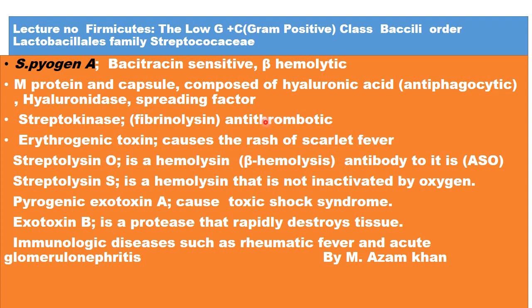Another important virulence factor of Streptococcus pyogenes is streptokinase, which is a fibrinolysin and anti-thrombotic enzyme. It is sometimes used clinically during coronary heart disease to dissolve thrombus. Streptococcus pyogenes also produces erythrogenic toxin, which causes the rash of scarlet fever — so scarlet fever is caused by Streptococcus pyogenes.